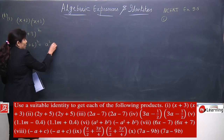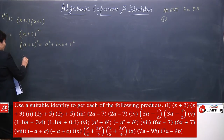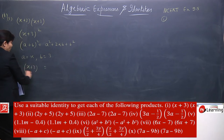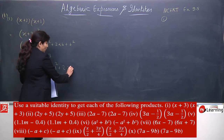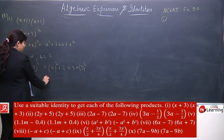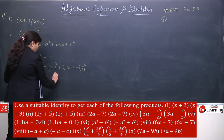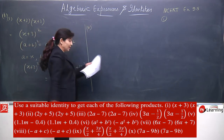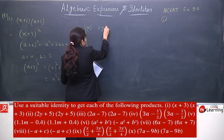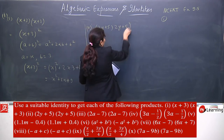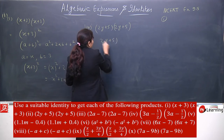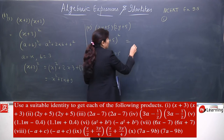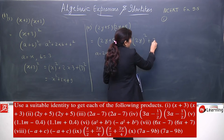We could multiply directly, but we must use an identity. Since the same term is multiplied twice, it means it is (x+3) whole square. Now recall the identity: a plus b whole square is equivalent to a square plus 2ab plus b square. For convenience, a is equivalent to x and b is equivalent to 3. Now apply the identity: (x+3)² = x square plus 2 times x times 3 plus 3 square = x square plus 6x plus 9.